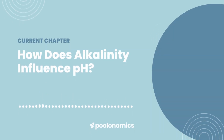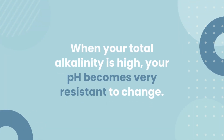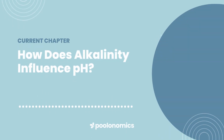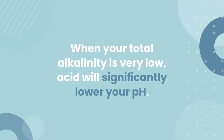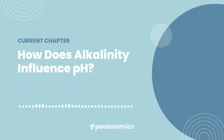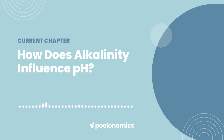How does total alkalinity influence pH? Total alkalinity has a strong influence over pH, so they do often correlate. When your total alkalinity is high, your pH level becomes very resistant to changes in the water, particularly the addition of acids that would normally lower it — a big part of why the pH level in most pools tends to drift upwards over time. But the same is also true in reverse: when your total alkalinity is very low, any acid introduced to your water will significantly lower your pH because it doesn't have the buffer it needs to resist that change. With that being said, they are still different measurements and can act independently, which means it's not impossible to see a pool with high pH and low alkalinity, or vice versa.